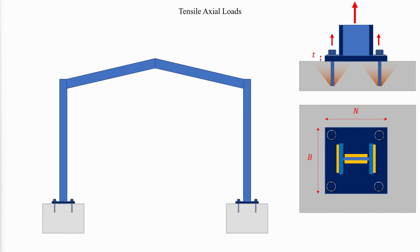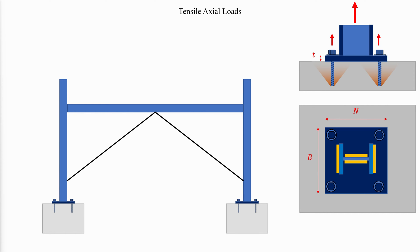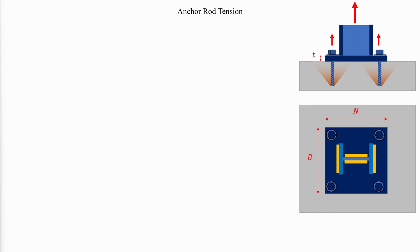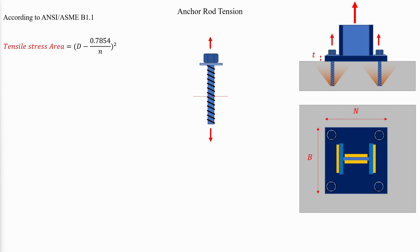The maximum net uplift for the column is obtained from the structural analysis of the building for the prescribed building loads. When the uplift due to wind exceeds the dead load off the roof, the supporting columns are subjected to net uplift forces. Columns in rigid bents or braced bays may also be subjected to net uplift forces due to overturning. The limiting tension on a rod is based on the minimum area along the maximum stressed length, which is typically within the threaded portion. ANSI/ASME B1.1 defines this threaded area using the major diameter D and number of threads per inch N.